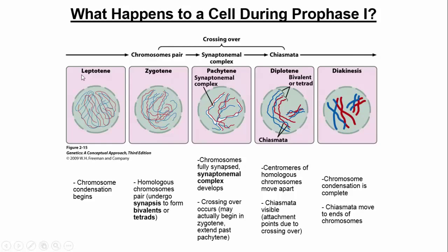Continuing the mnemonic: 'plays double deuces' — the double comes from diplotene, since 'di' means two. And 'deuces' is diakinesis. I think of a little zebra gambling in Las Vegas packing double deuces — not a very good hand in cards — and the zebra probably gets in trouble and dies. So: little zebra plays double deuces gives you leptotene, zygotene, pachytene, diplotene, diakinesis.